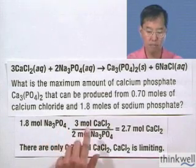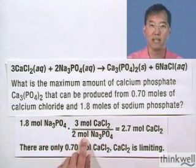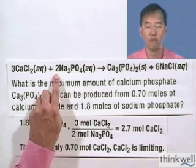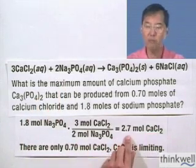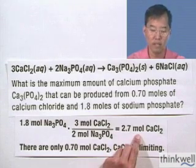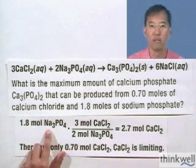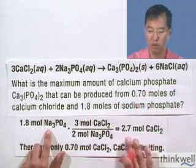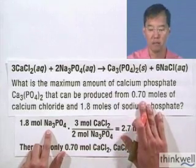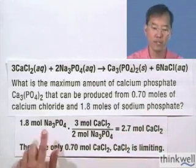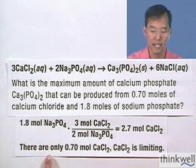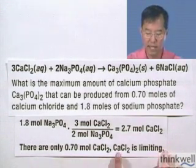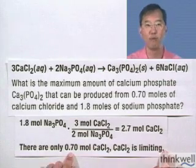Using the balanced reaction, we multiply 1.8 moles of sodium phosphate by a fraction relating calcium chloride to sodium phosphate: 3 moles of calcium chloride divided by 2 moles of sodium phosphate gives 2.7 moles of calcium chloride. This represents how much calcium chloride we would need to react with all of the 1.8 moles of sodium phosphate. Clearly, we don't have 2.7 moles — we only have 0.7 moles. So our assumption that sodium phosphate was the limiting reagent is incorrect, and since there are only two reagents, calcium chloride must be the limiting reagent.